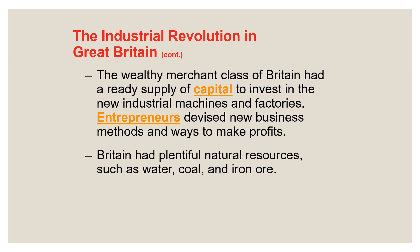Britain also had plenty of natural resources needed for the Industrial Revolution to happen there first. Such natural resources included water, which could be used to help power some of the machines being invented. Coal could also be used to power these machines, as well as iron ore being utilized to build the machines — so these are all other reasons why Great Britain was first in the Industrial Revolution.